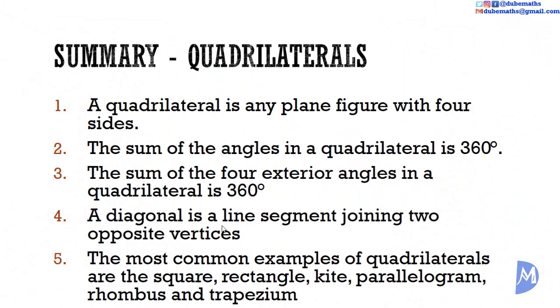So, in summary, a quadrilateral is any plane figure with four sides. The sum of the angles in a quadrilateral is 360 degrees. The sum of the four exterior angles in a quadrilateral is also 360 degrees. A diagonal is a line segment joining two opposite vertices. The most common examples of quadrilaterals are the square, rectangle, kite, parallelogram, rhombus, and trapezium.